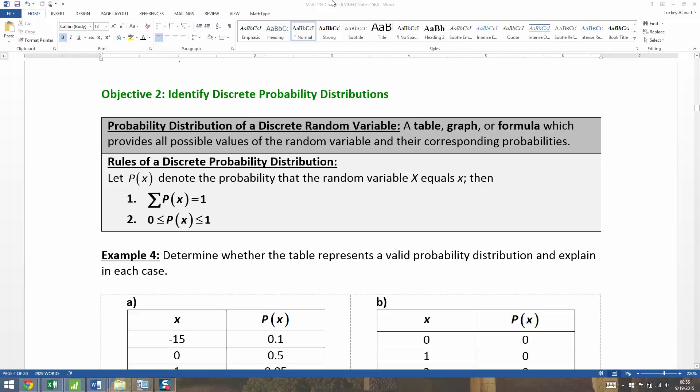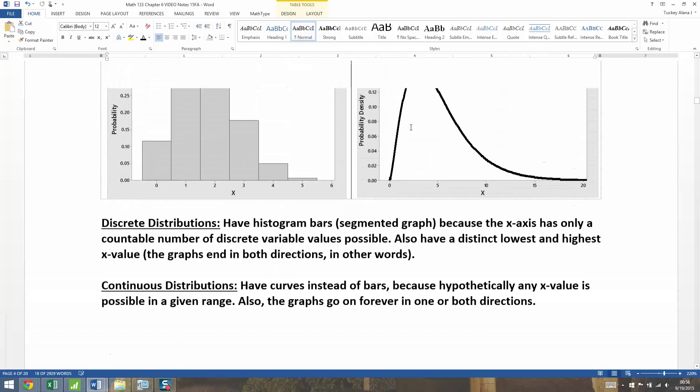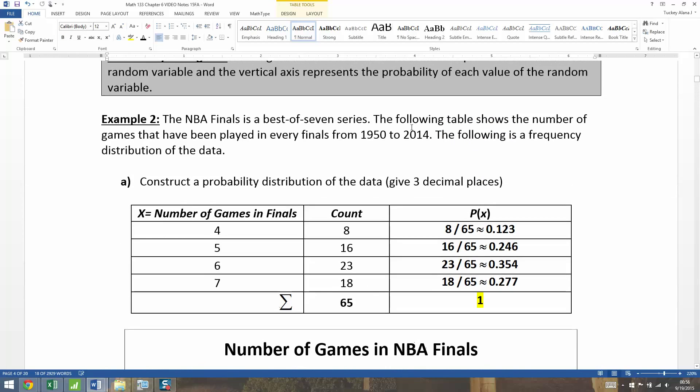So a probability distribution of a discrete random variable is a table, a graph, or formula which provides all possible values of the random variable and their corresponding probabilities. Now we actually already saw this, if I go back here to the NBA example.